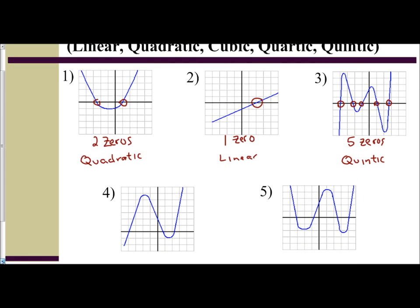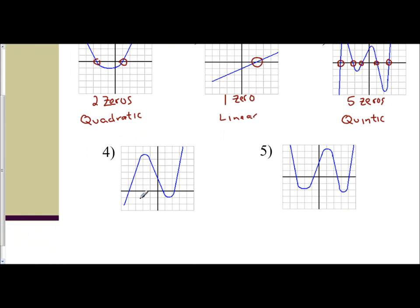If we look at example four, I can see I have one, two, three zeros. Three zeros represents a cubic function.